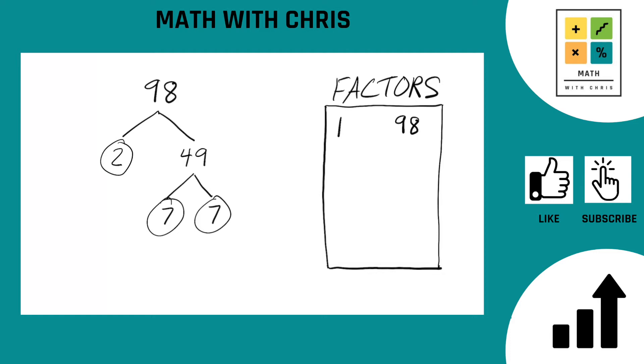So now we can go ahead and bank the prime numbers we found. We found a two, and we found a seven. The prime factors of 98 are two, seven, and seven. Let's go ahead and multiply that out. Two times seven times seven is 98. What do you know?